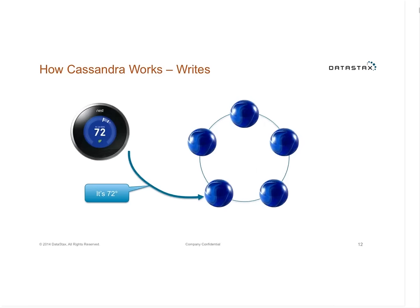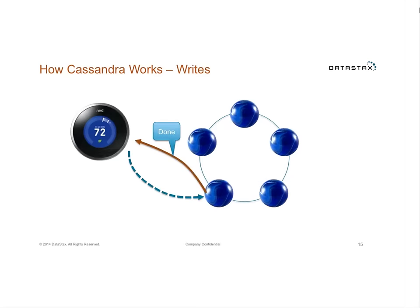Thinking briefly about how Cassandra works on writes: our Nest thermostat connects to the cluster and sees the whole set of nodes, making load balancing decisions — say, a round robin. He tells one node 'it's 72 degrees.' That node may not own the data, but that's okay — he acts as the coordinator, like a maître d', routing the write to the node that owns the data. That node responds when done, and the coordinator replies back to the client.